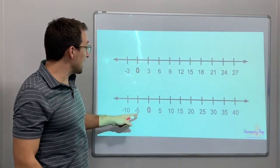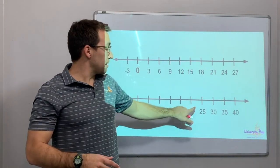This is by 5: negative 10, negative 5, 0, 5, 10, 15, 20.